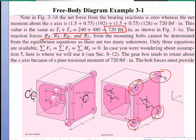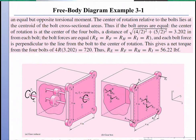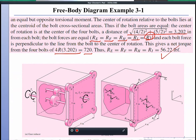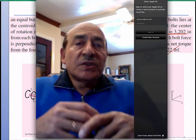With equal bolt forces assumed, I find the center of rotation on the bolt face and take the moment of each bolt force about that center. The distance from each bolt to the center is calculated using the Pythagorean theorem, giving 3.2 inches. Setting 4 × F_bolt × r = 720 and solving gives the required force at each bolt.